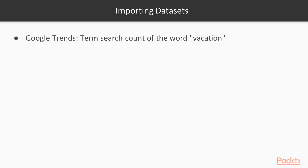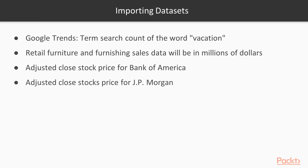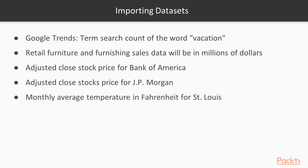The first one is Google Trends — it's basically a term search count of the word 'vacation', so this is essentially count data. The second example is retail furniture and furnishing sales data in millions of dollars. The third example is the adjusted close stock price for Bank of America. The fourth is the adjusted close stock price for JP Morgan Bank, and the fifth is the monthly average temperature in Fahrenheit for St. Louis. Let's head over to the Jupyter Notebook and get started.